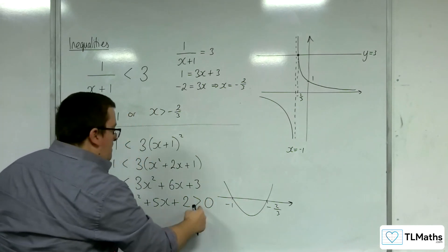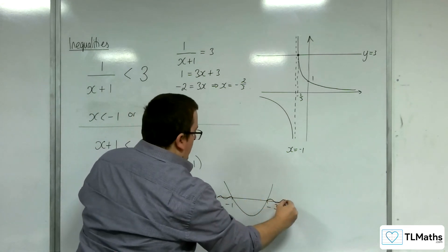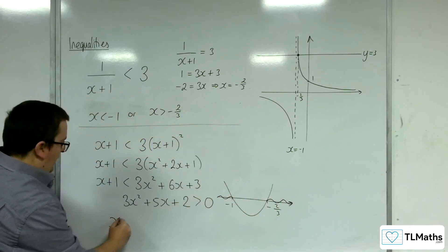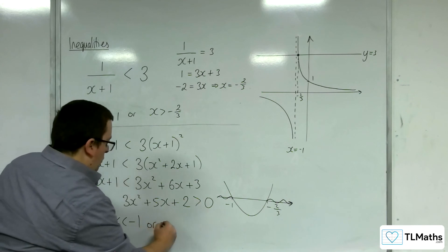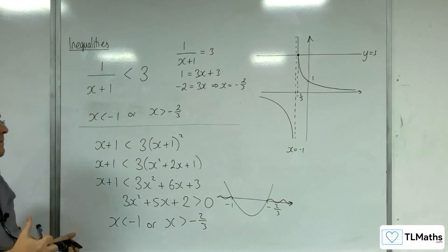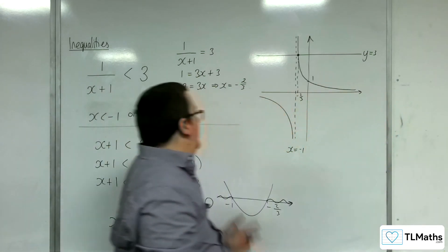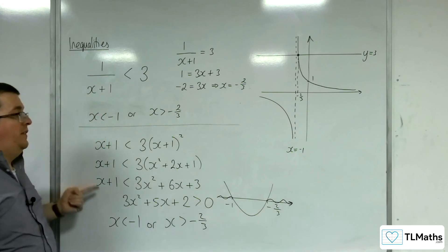So where is that above the x-axis? Well, it's above it there and there. So, when x is less than minus 1 or x is greater than minus 2 thirds. You can see that we've got to the same answers we did previously using this method.